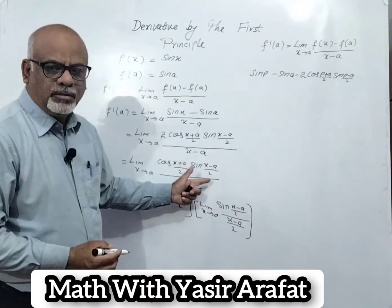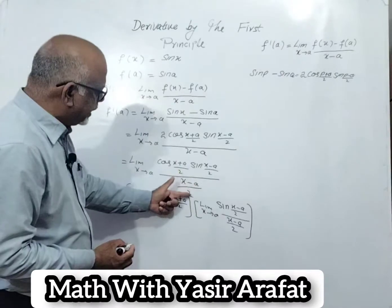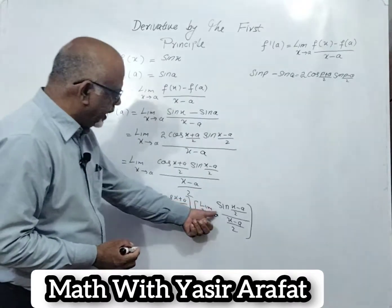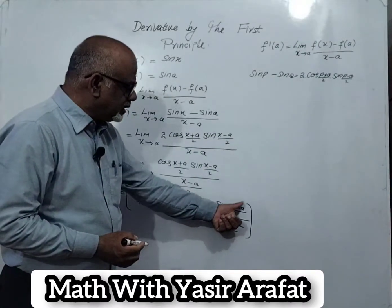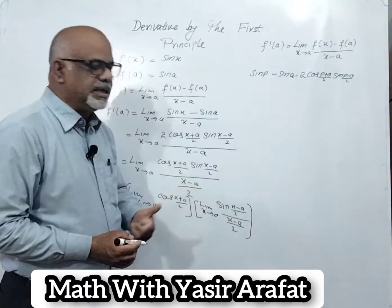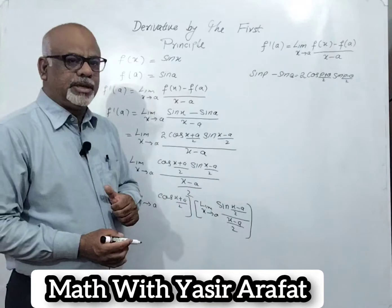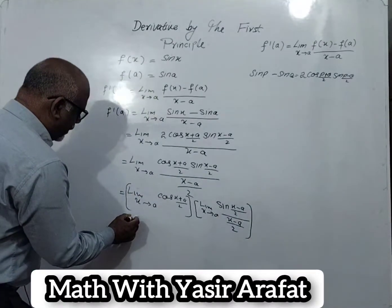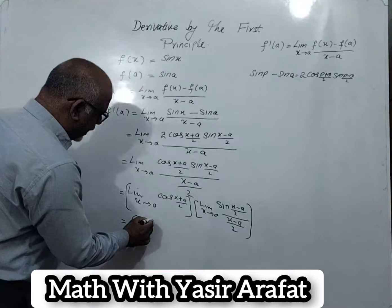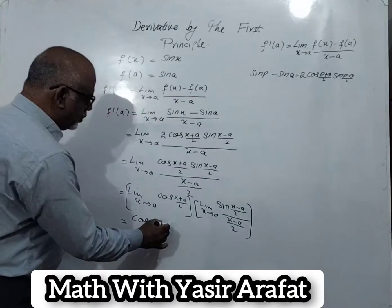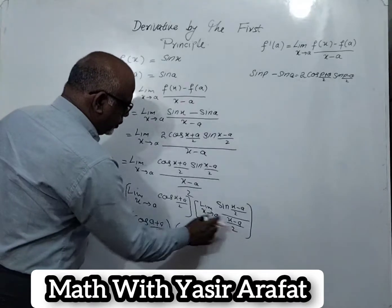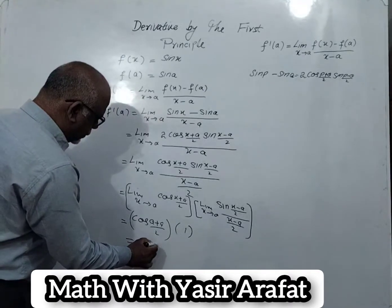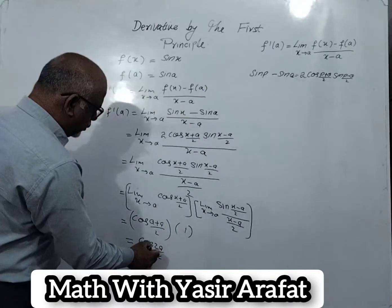These two functions are in product form, so we can write (x minus a)/2 in the denominator of the sin function. This gives us sin((x minus a)/2) divided by (x minus a)/2, which becomes the sandwich theorem. When we apply the limit, this whole factor equals 1. Applying the limit x tends to a, and the sandwich theorem equals 1.